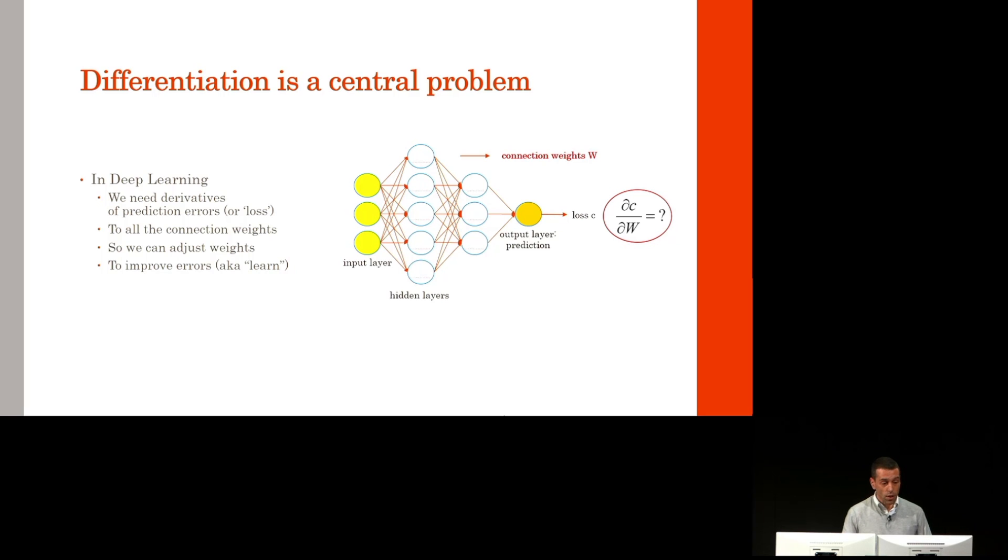In deep learning, we must compute the derivatives of prediction errors, also called losses, to all the connection weights in the network so that we can adjust these weights to improve the errors. That's how we train a network.